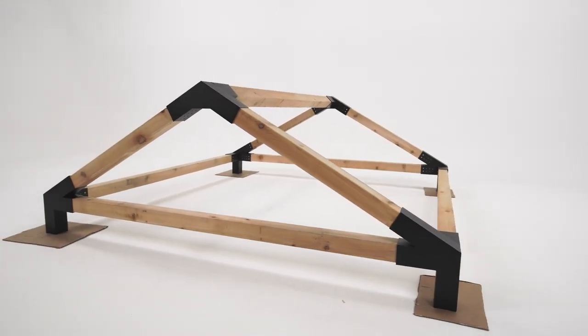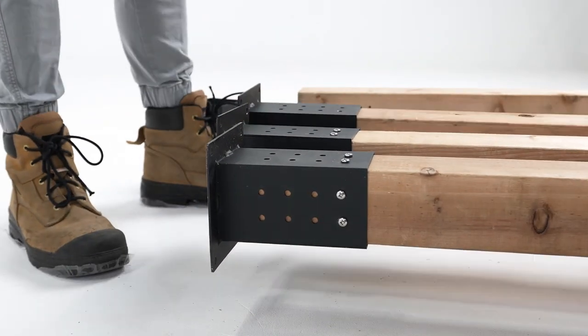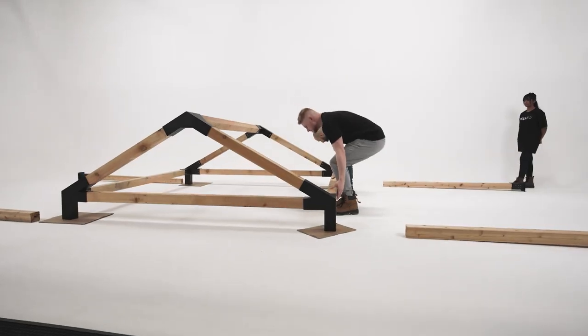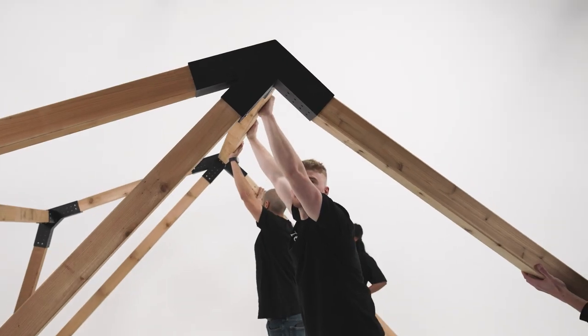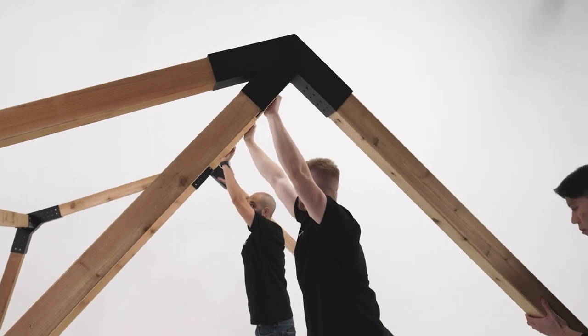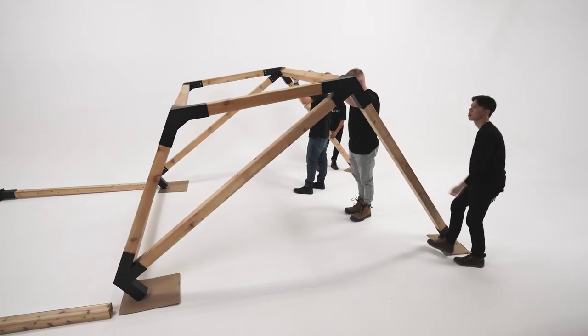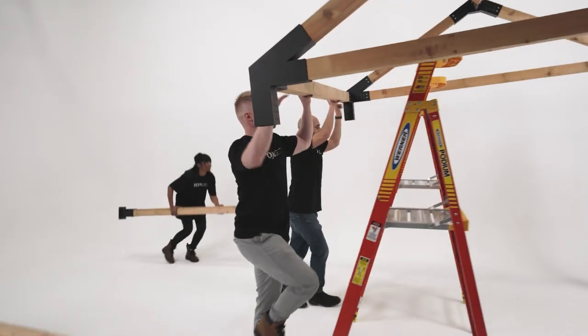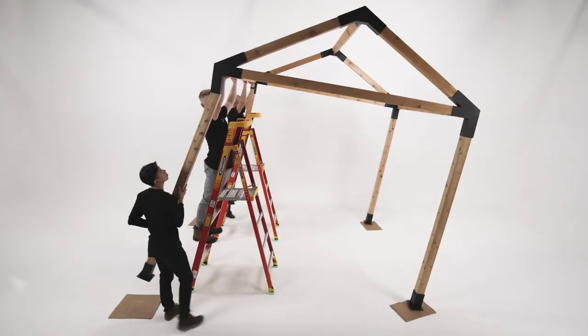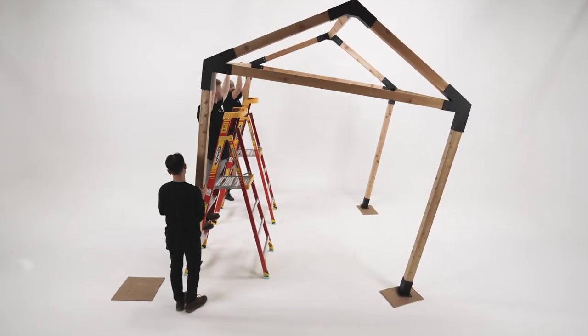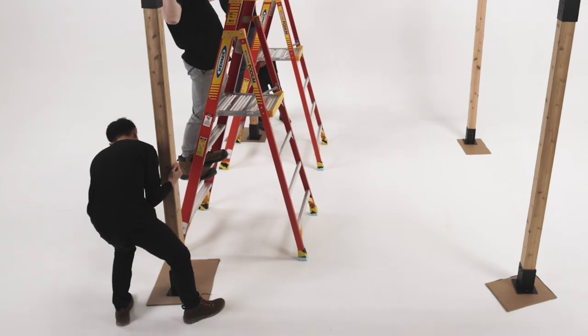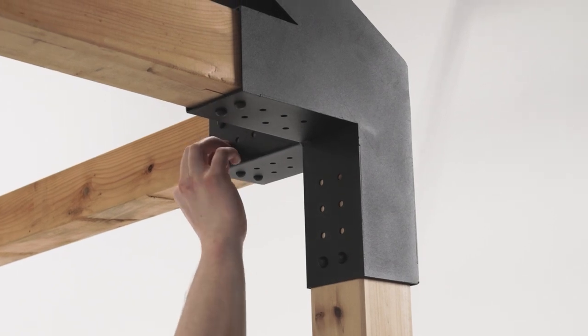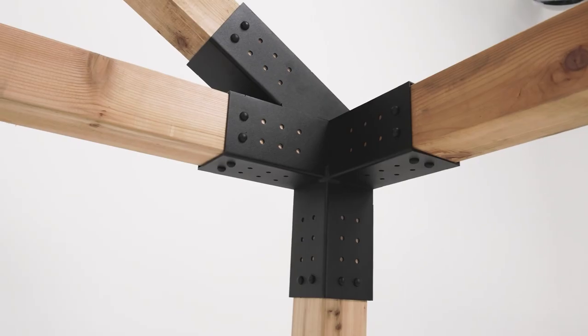Once the top is complete and solo brackets have been placed and fastened to all vertical posts, lift one side and insert two vertical posts into the bottom of the Trio 30 brackets and fasten with screws. Lift the other side and insert the remaining two vertical posts and fasten with screws. Apply caps and enjoy.